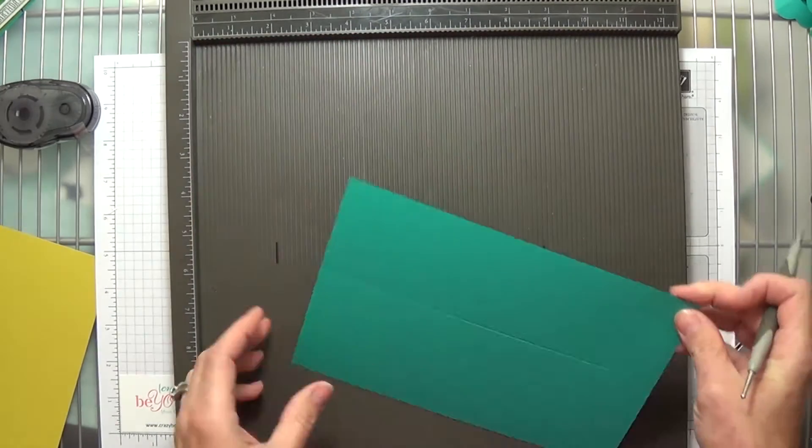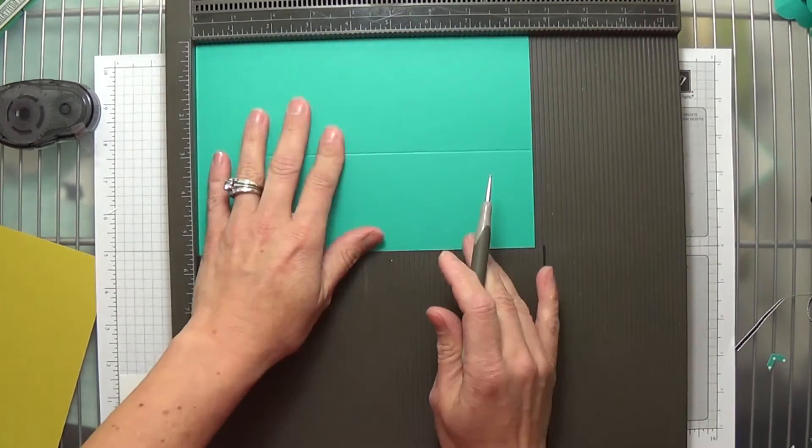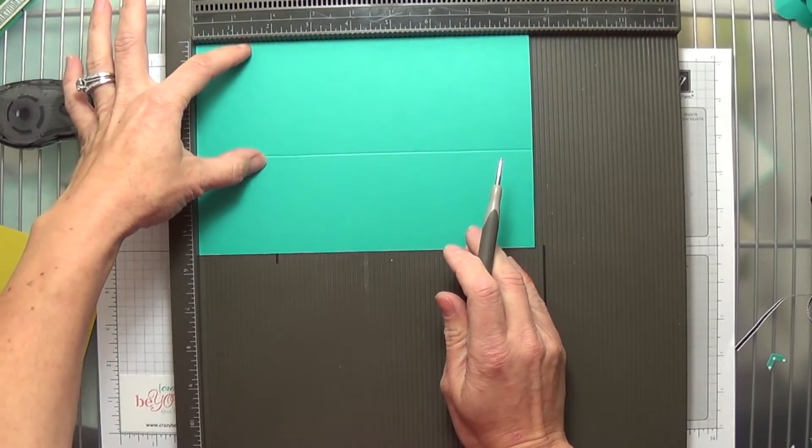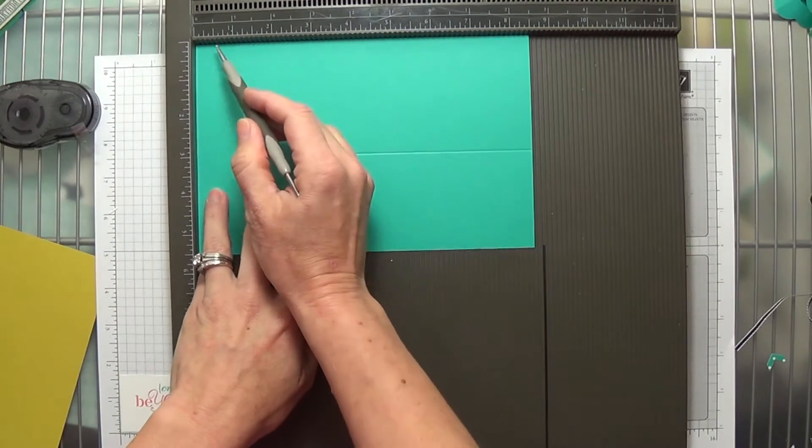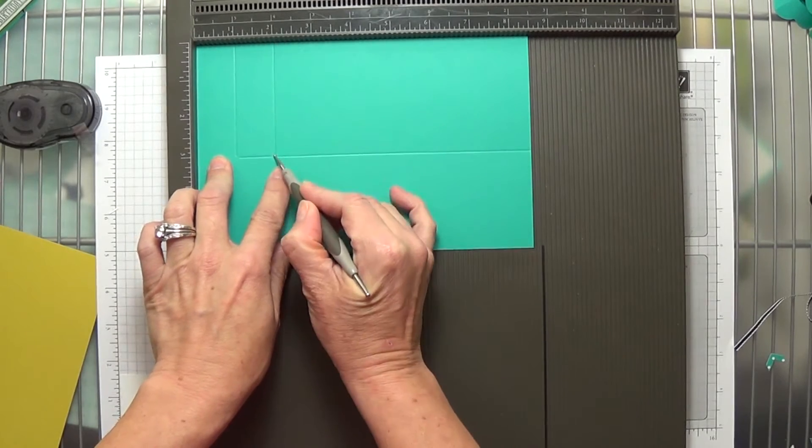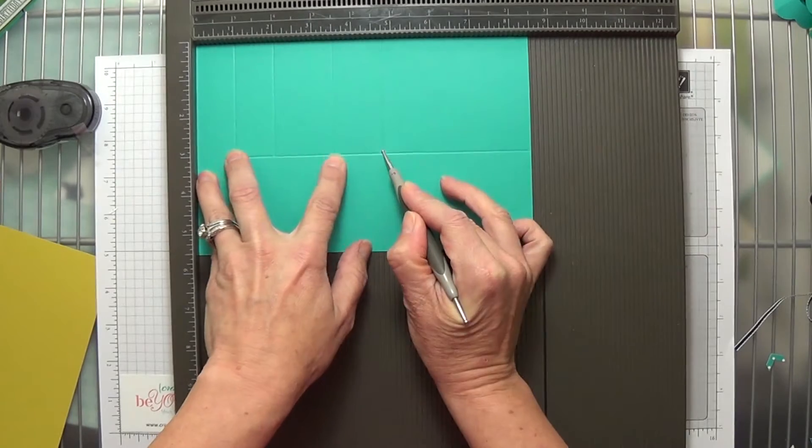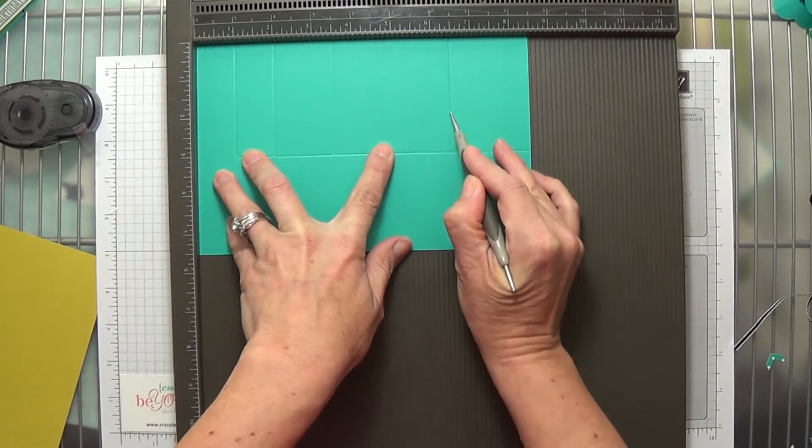Then we're going to turn it - actually want the 3 inch section up here at the top of my scoreboard - and we're going to score it at 1, 2, 3 1⁄2, 4 3⁄4, and 6 1⁄2.